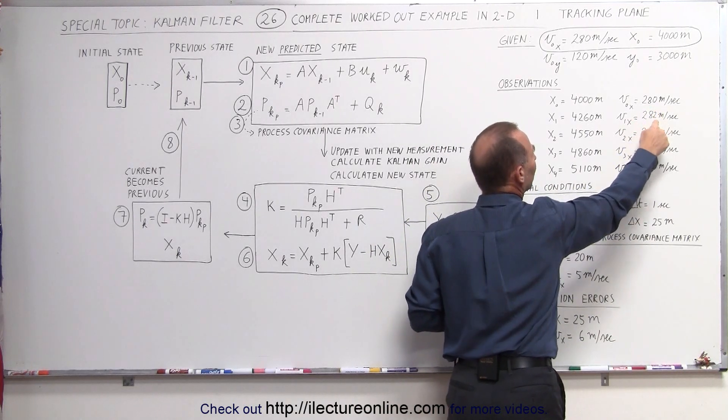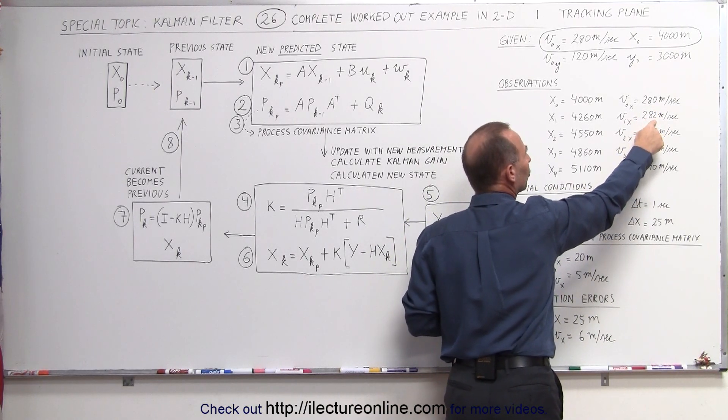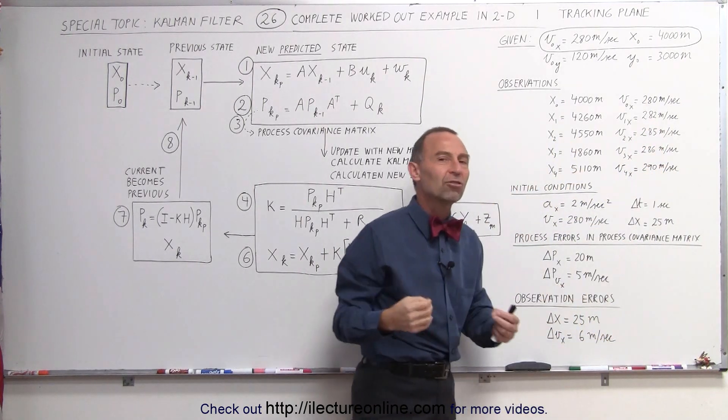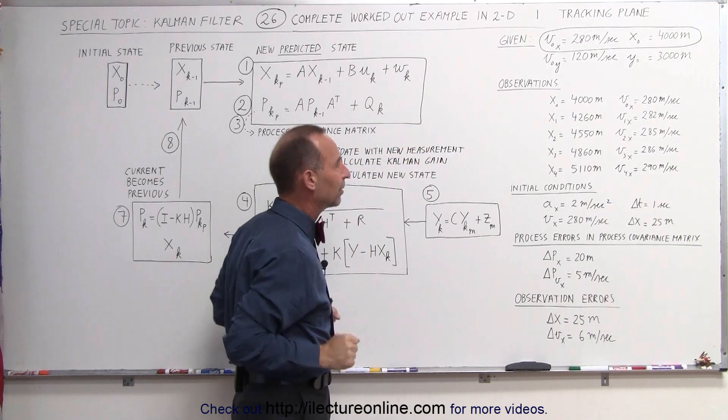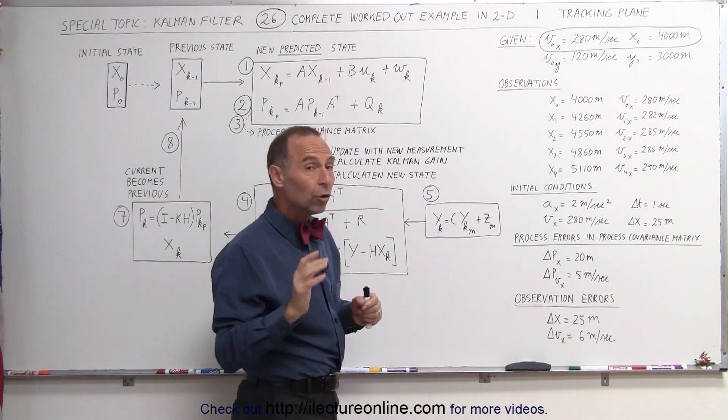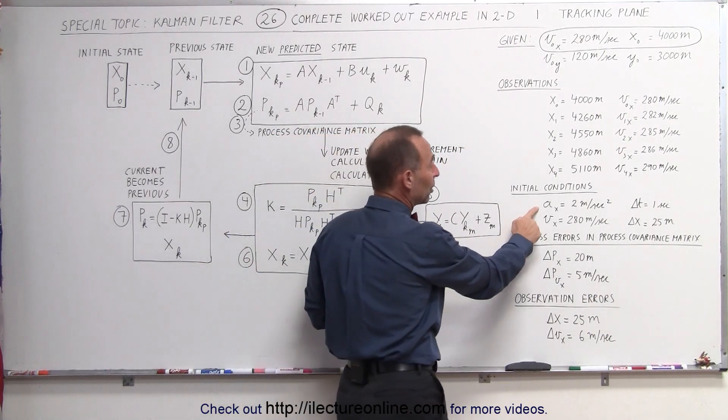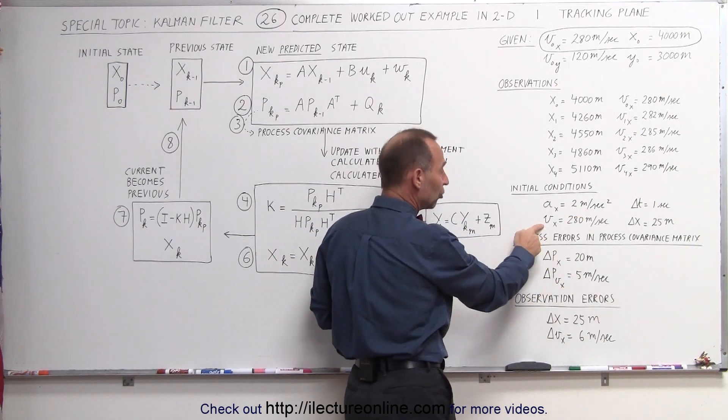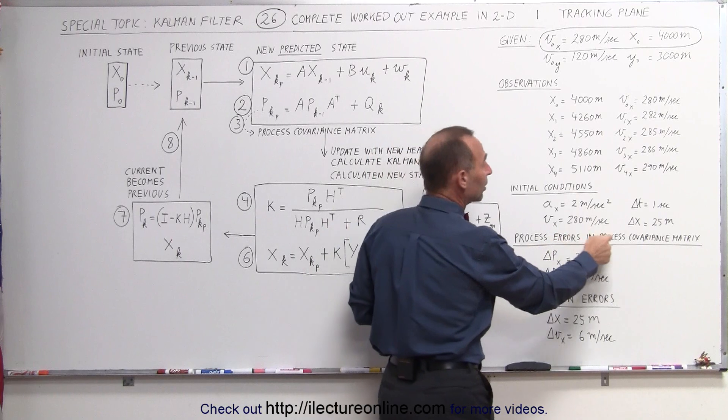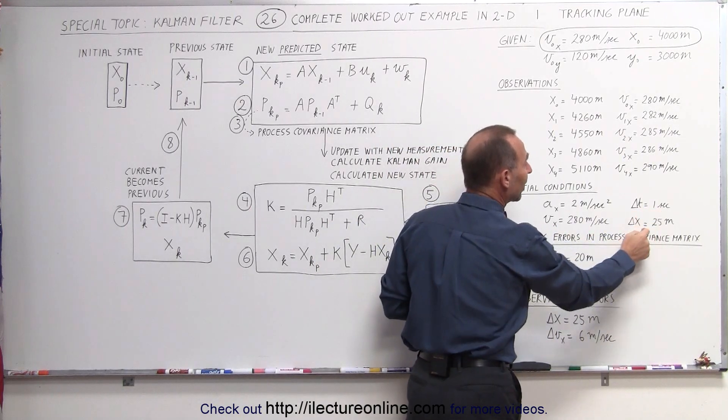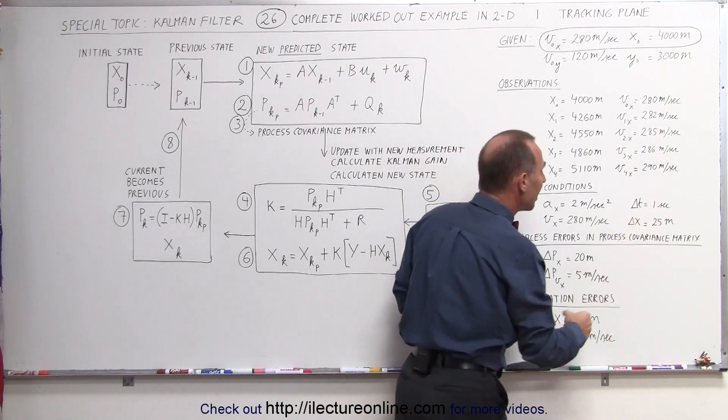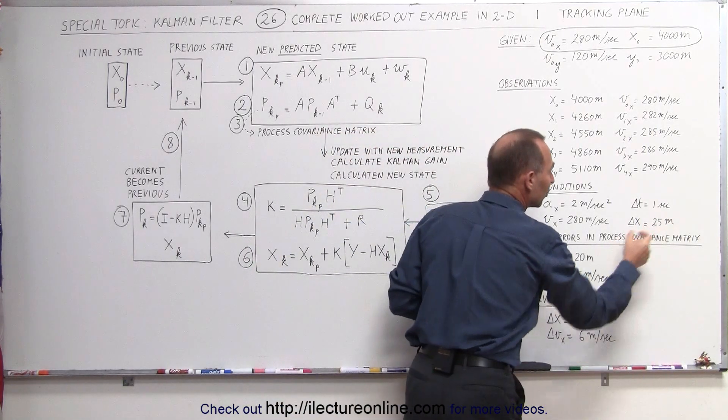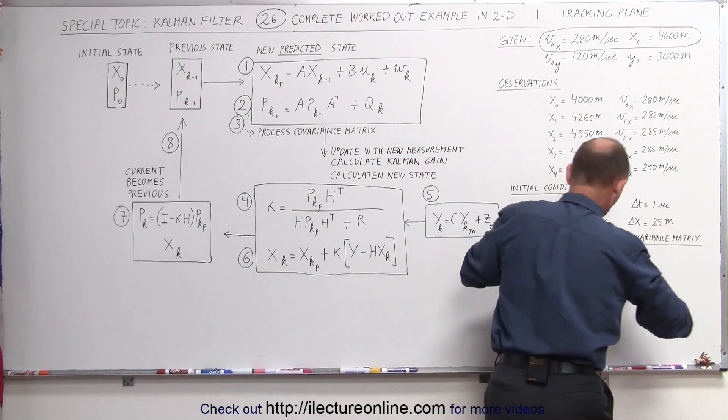And then velocities, after one second we notice a 282, a 285, a 286, a 290. Those will be observational measurements as we're trying to keep track of that plane. Also notice we have some initial conditions. We are assuming some initial acceleration of 2 meters per second squared. The initial velocity of 280 meters per second. Notice that delta t equals one second. And also notice that the uncertainty in the measurement is going to be 25 meters.